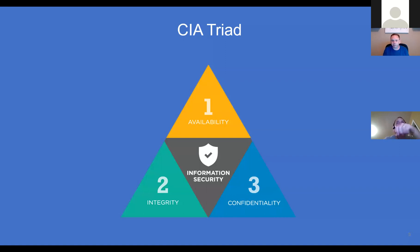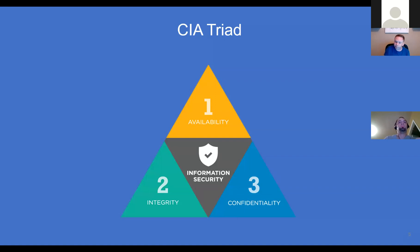We care about availability — if our systems aren't available, the company's not going to make money. We have to protect something and those systems have to be available. Integrity: making sure that data has not been changed, that it has its integrity and hasn't been modified. And then confidentiality.